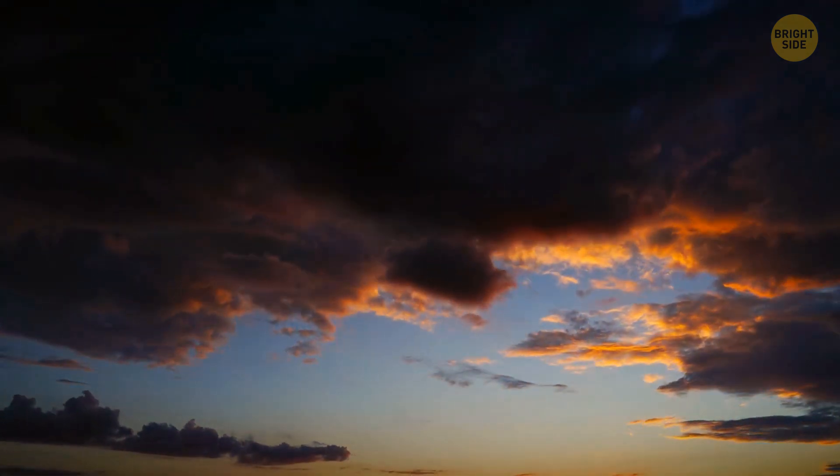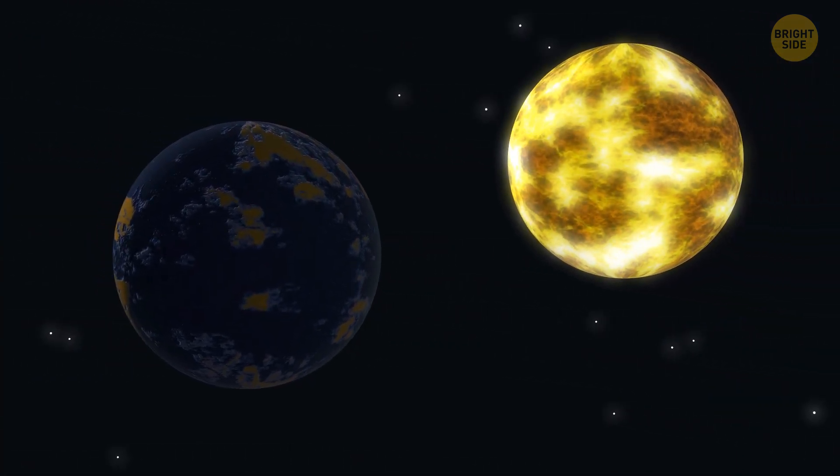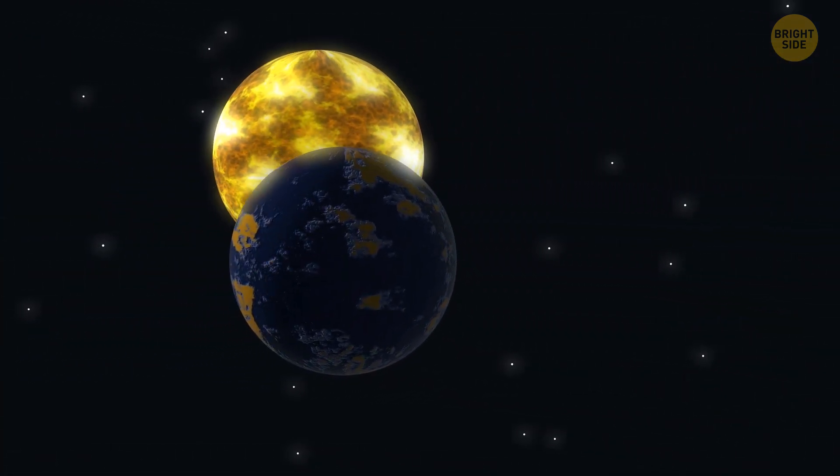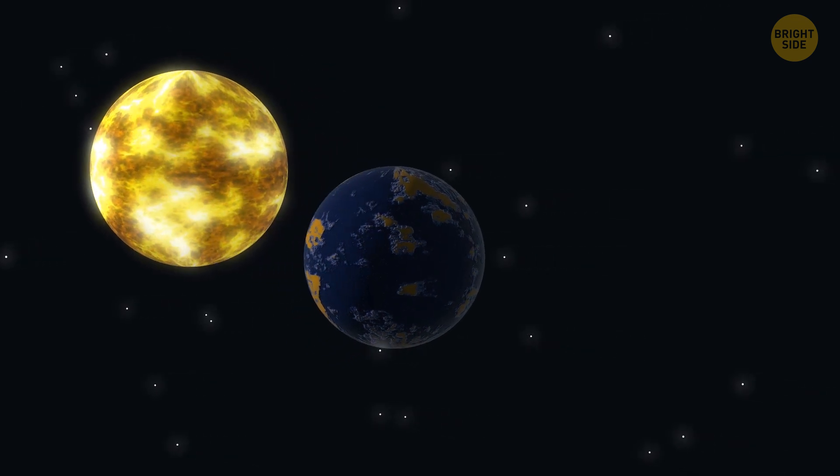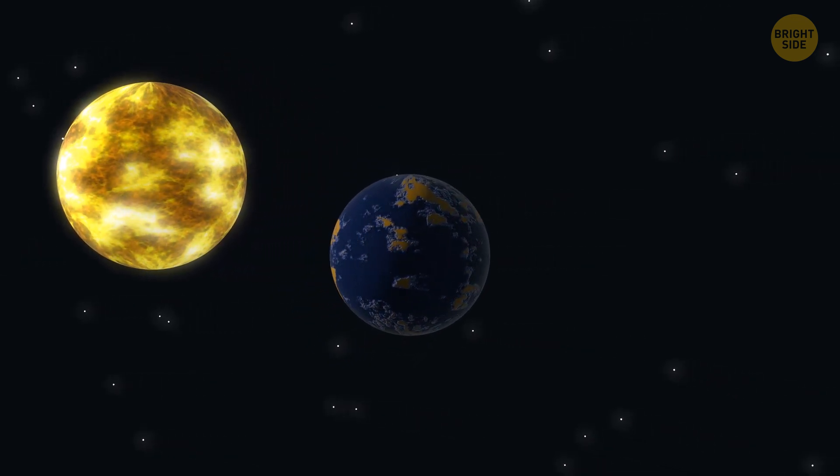But don't be fooled. Venus, our neighbor, is the second planet from the sun, and it's no picnic. Its surface is hot enough to melt lead, and the atmosphere is so thick that the sun is just a blurry smudge.